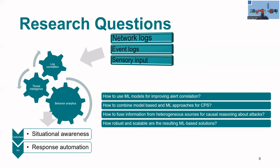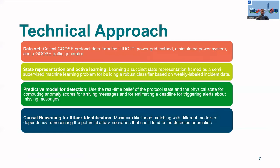Within this bigger framework, what we are focusing on is how to use machine learning models for improving error correlation, how to combine model-based and machine learning approaches in the case of cyber-physical systems, how to fuse, that is combine, information from different sources for causal reasoning about potential attacks, and finally, how robust and scalable are the resulting machine learning-based solutions.